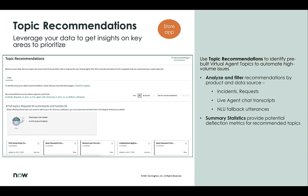Topic recommendations is receiving updates in San Diego. You can use topic recommendations to identify pre-built virtual agent topics to automate high-volume issues. You can now analyze and filter recommendations by product and data source, such as incidents and requests, live agent chat transcripts, and NLU fallback utterances. We also provide summary statistics for potential deflection metrics for recommended topics.